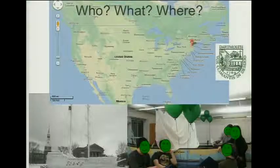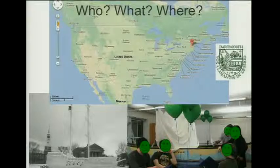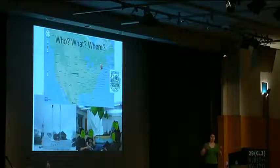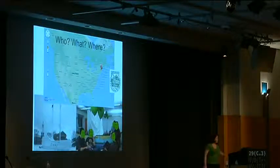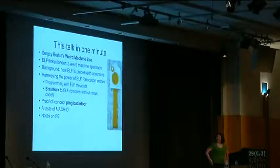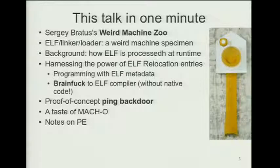I come from Dartmouth College, over in New Hampshire — that tiny little state up in red on the map in the US. It snows, and sometimes we build ships out of snow, and if it's too cold to be outside, we bring one inside our lab and do shippy things. In one minute, I want to introduce Sergey Bratus' Weird Machine Zoo, in case you haven't heard it before, because this is part of his collection.